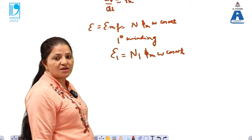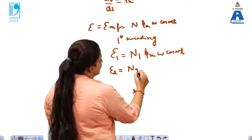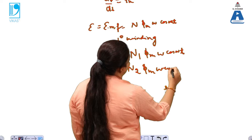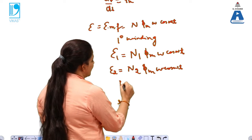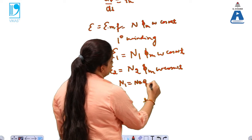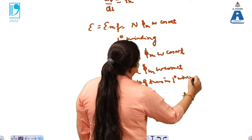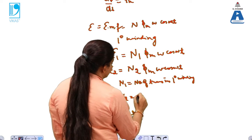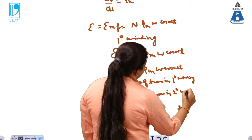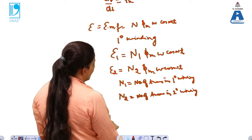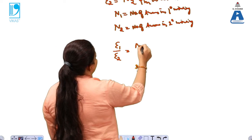For the secondary winding, E2 = N2 · φm · ω · cos(ωt), because the flux is the same in both the primary and secondary windings. N1 is the number of turns in the primary winding, N2 is the number of turns in the secondary winding, and the flux is the same in both cases. Therefore, the EMF ratio E1/E2 = N1/N2.